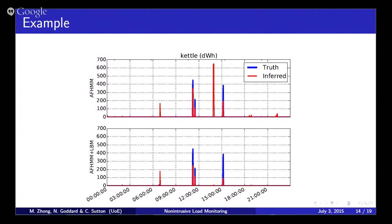This is some examples shown here. This is the FHMM. The truth is blue and inferred is red. This is the new method. Here you see about four times used by FHMM, usually estimated. This looks better.